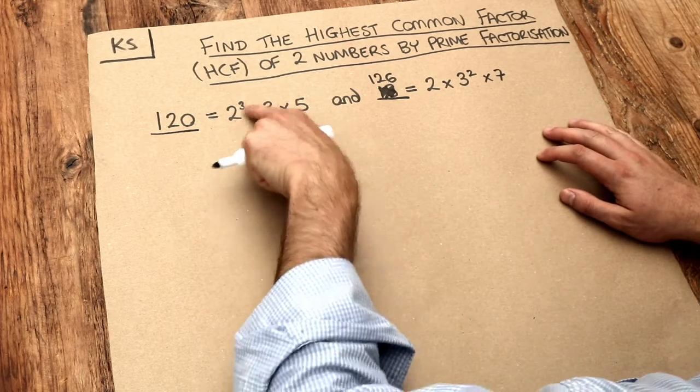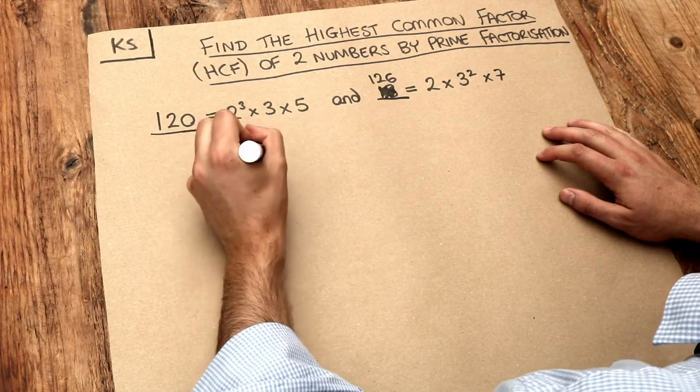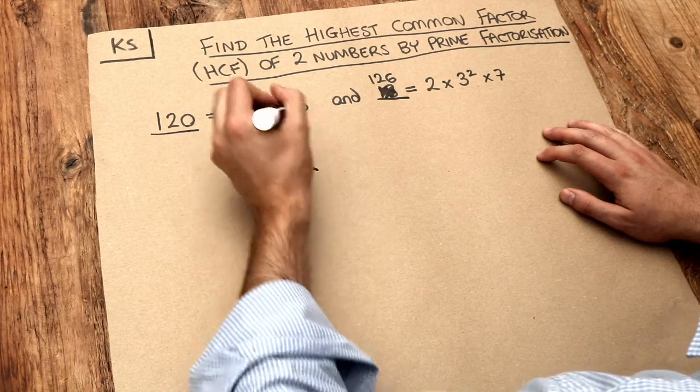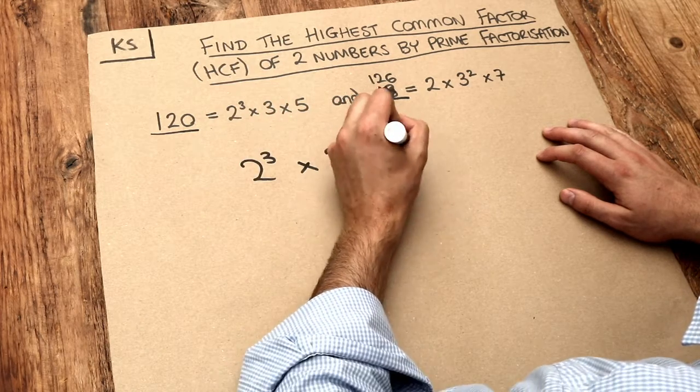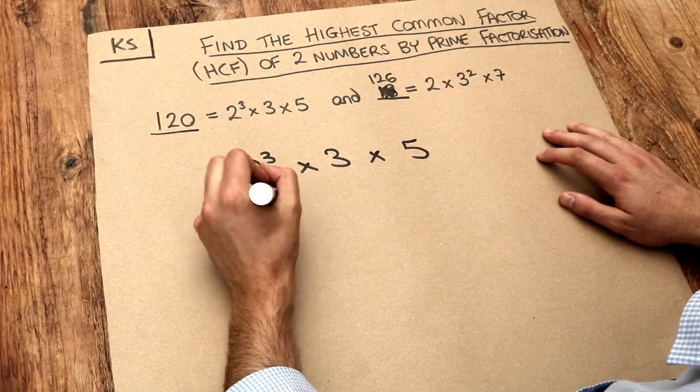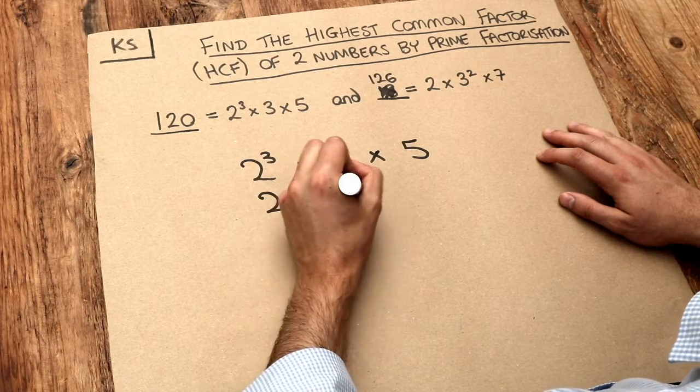Now what we do is we write the prime factorization one above the other. So we've got 2³×3×5, and then let's write this other one below it: 2×3².